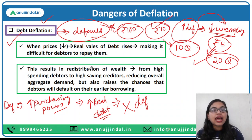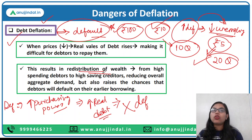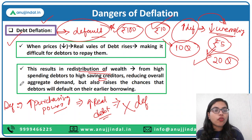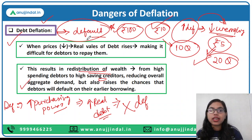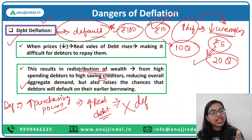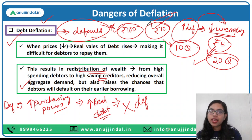In this scenario there will be a redistribution of wealth. The debtors will stop taking loans because they have to pay more in real terms. The creditors who were giving loans will become high-saving creditors because they are getting more money for the loans they have provided. This will result in an overall reduction in demand, because debtors will not be incentivized to take further loans, resulting in lower aggregate demand — and because of lower aggregate demand, the deflation condition will become even more worrisome.